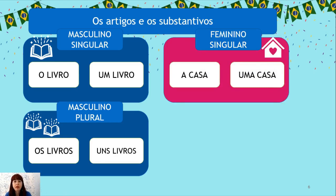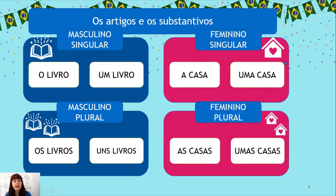Feminino singular: A casa — very specific, 'the house'; Uma casa — very general, 'a house'. Feminino plural: As casas — specific; Umas casas — in general. These are eight tiny words that are very important for Portuguese, so please do learn them.